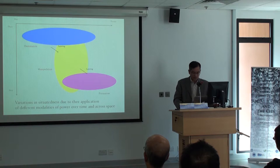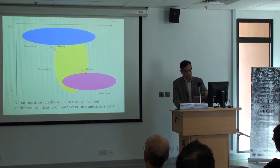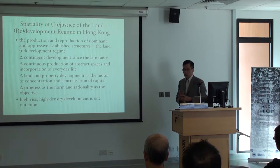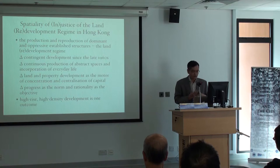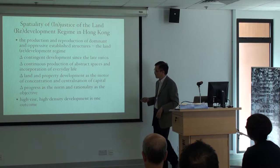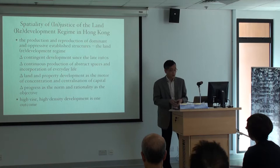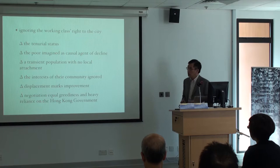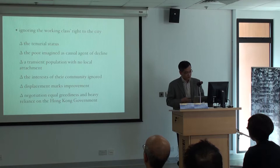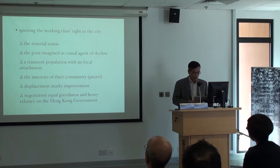Given the time constraint, I would just go over this and try to say how these could allow us to examine the high density problematic. We argue that starting in the 1960s there was the land redevelopment regime, and that regime was really dictating how space has been produced. What I would argue is that at the end we would have the high rise, high density development — one of the outcomes. In this process, the working class and grassroots would suffer because of the way the land redevelopment regime has been emphasising.